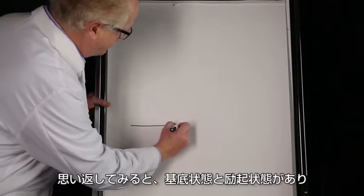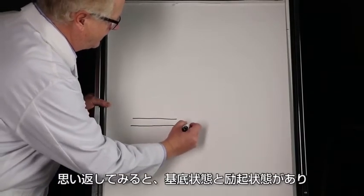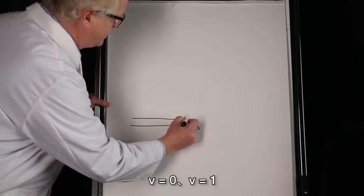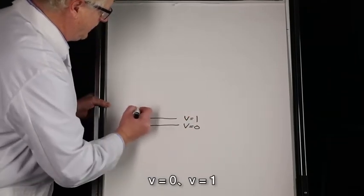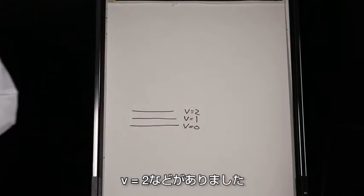If we remember, we had the ground state and the excited state: V equals zero, V equals one, V equals two, and so on and so forth.